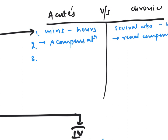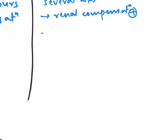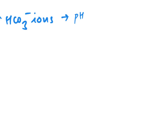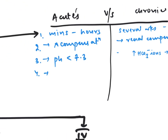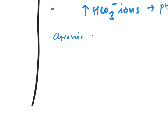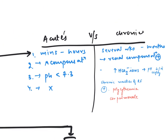The third point: in acute respiratory failure, pH will be less than 7.3. In chronic respiratory failure, renal compensation is present, therefore bicarbonate ions increase, and therefore pH is slightly decreased or normal. Chronic markers of respiratory failure — like polycythemia and cor pulmonale — are absent in acute but present in chronic respiratory failure.